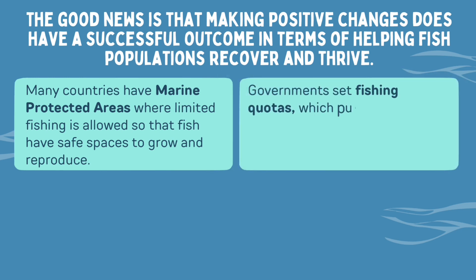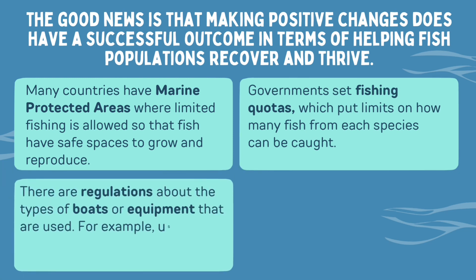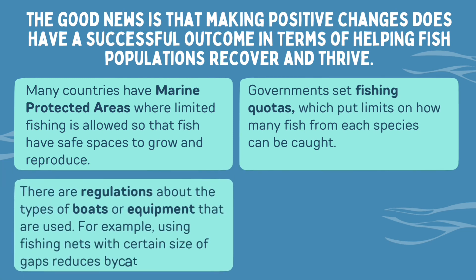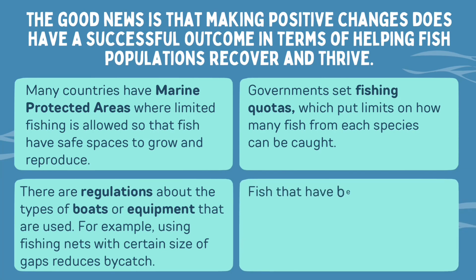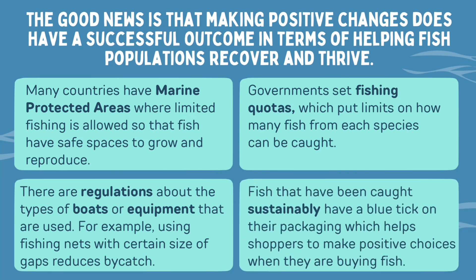Governments set fishing quotas which put limits on how many fish from each species can be caught. There are regulations about the type of boats and equipment that are used — for example, using fishing nets with certain size gaps to reduce bycatch. Fish that have been caught sustainably have a blue tick on their packaging, which helps shoppers to make more positive choices when they're buying fish.